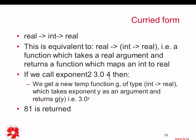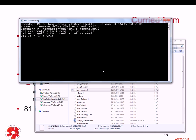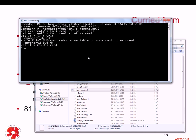When we call exponent2 with 3.0 and 4, internally we get a function of type g that maps int to real, and that function takes an exponent y and returns 3.0 to the power of y. If we try exponent2 of 3.0 and 4, we get 81 — that's 3 to the power of 4. And this is of course the same as calling exponent1 with the pair (3.0, 4), which also gives 81.